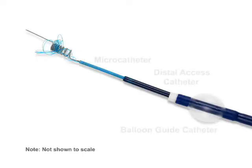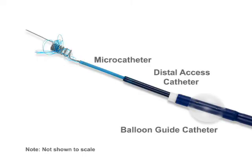Note that this system configuration is now a triaxial system. The maximum working length of the Mercy Distal Access Catheter beyond the Mercy Balloon Guide Catheter is approximately 20 centimeters. The maximum working length of the Mercy Microcatheter beyond the tip of the Mercy Distal Access Catheter is approximately 11 centimeters.